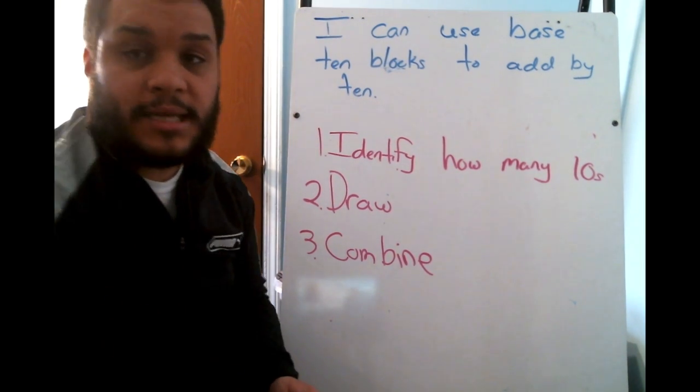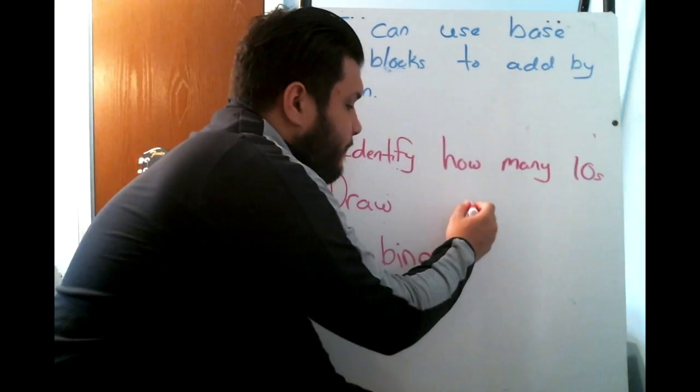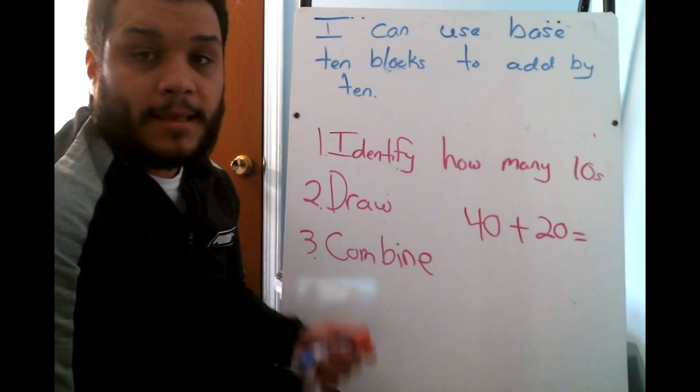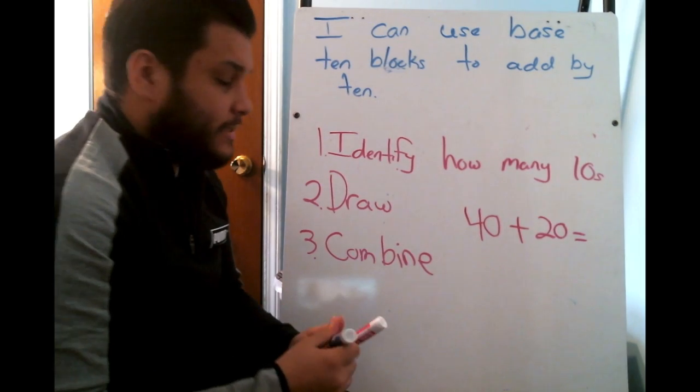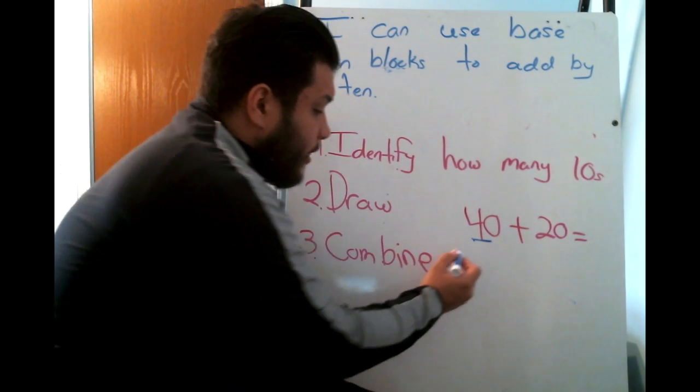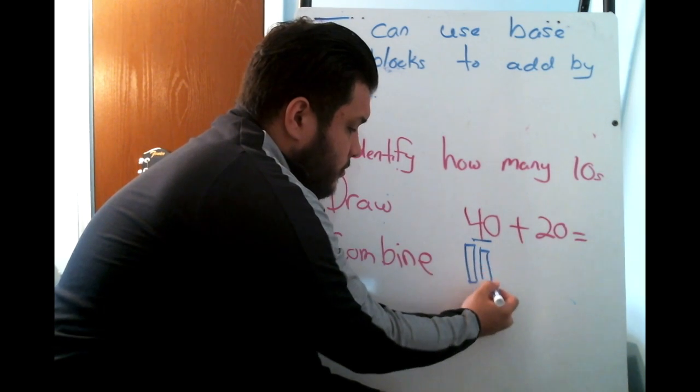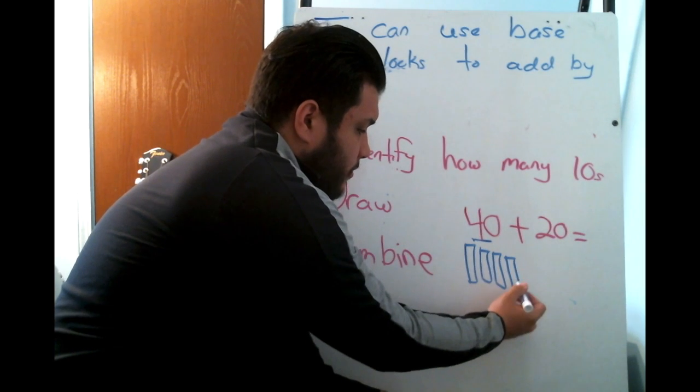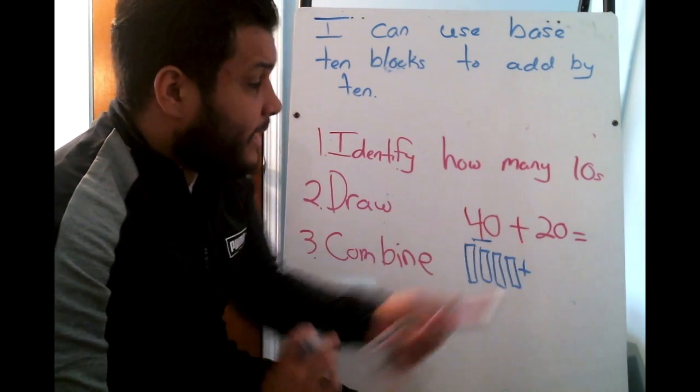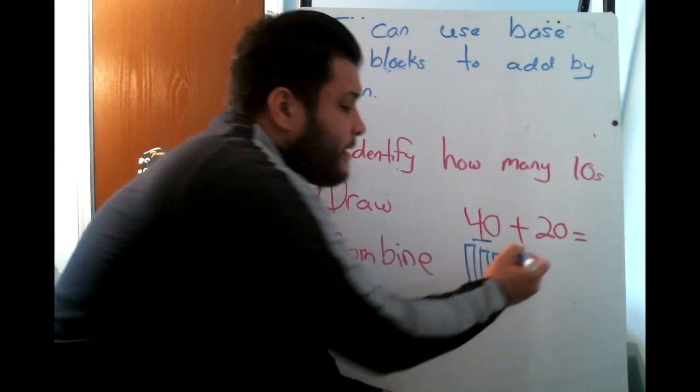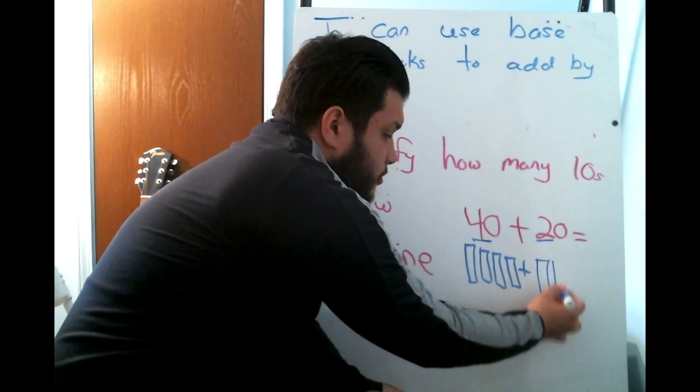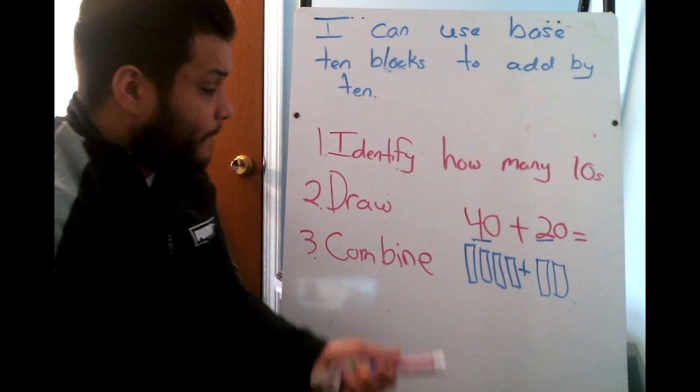We'll do one last problem together using our steps. 40 plus 20 equals what? Step number 1 is identify how many 10s. I have 4 10s here. Step number 2 is draw them. 1, 2, 3, 4. Step number 3 is combine. Can I combine yet? No, because I haven't done my second number. So, let me go back. Step number 1, identify how many 10s. 2 10s. Step number 2, draw them. 1, 2. And step number 3, combine.